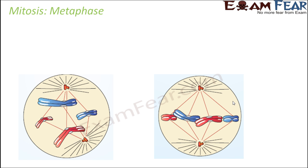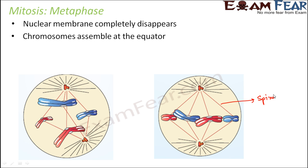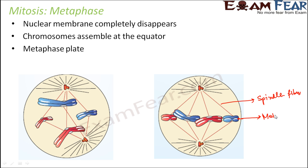Now in the next step — metaphase — the nuclear membrane completely disappears. Chromosomes then assemble at the equator of the cell, attached to spindle fibers at their kinetochores. Due to the forces exerted by both the centrosomes and the fibers, chromosomes are arranged at the equator, and this arrangement is known as the metaphase plate because it resembles a plate at the equator.